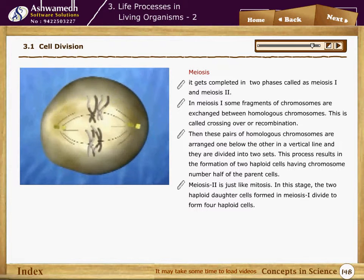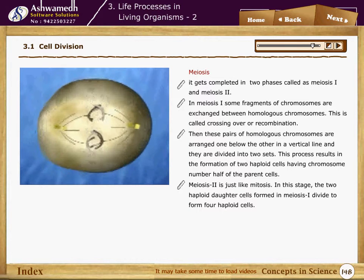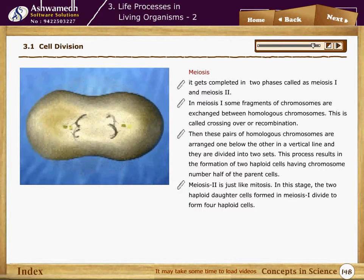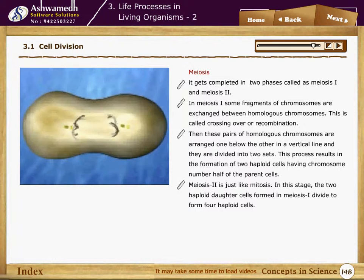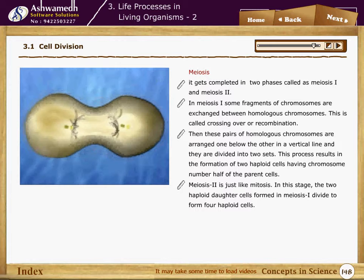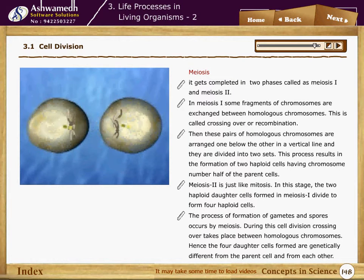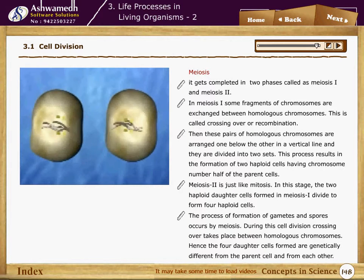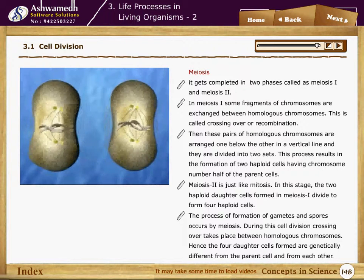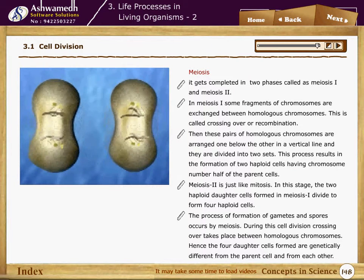Meiosis two is similar to mitosis. The two haploid daughter cells formed in meiosis one divide to form four haploid cells. The formation of gametes and spores occurs by meiosis. During cell division, crossing over takes place between homologous chromosomes, so the four daughter cells formed are genetically different from the parent cell and from each other.